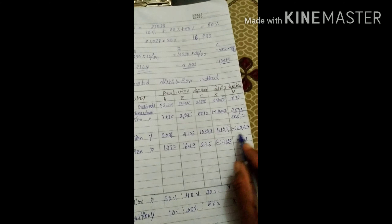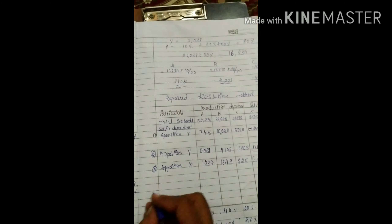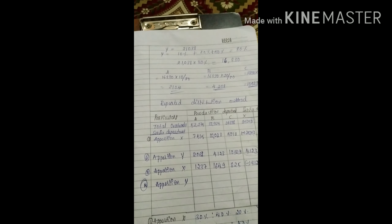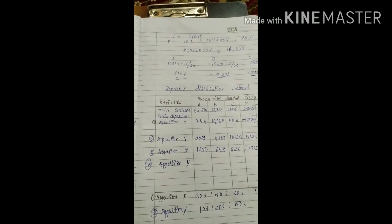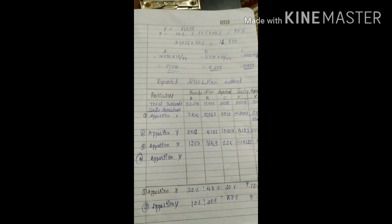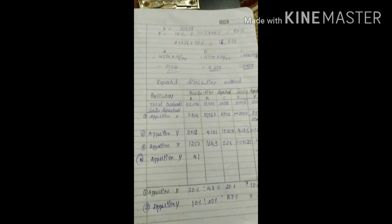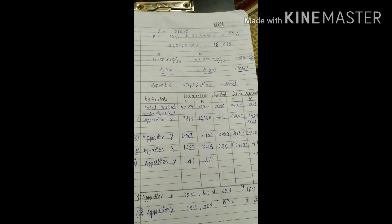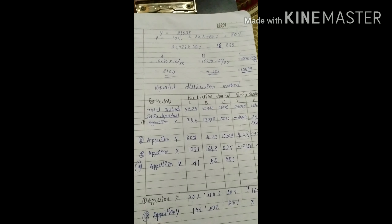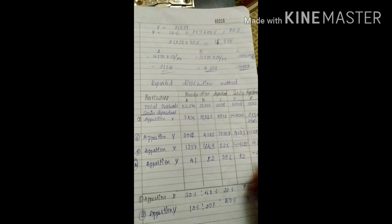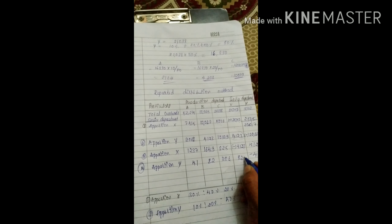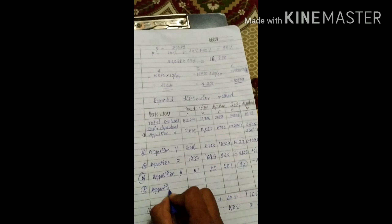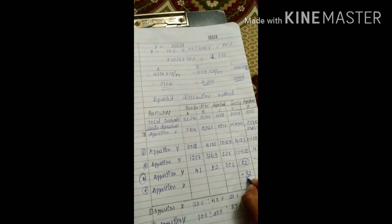X has a new value of 4,123. Apportion X again: 4,123 into 30% gives 1,237 to A; 4,123 into 40% gives 1,649 to B; 4,123 into 20% gives 825 to C; 4,123 into 10% gives 412 to Y. Now Y has a new value of 412, so reapportion Y: minus 412.